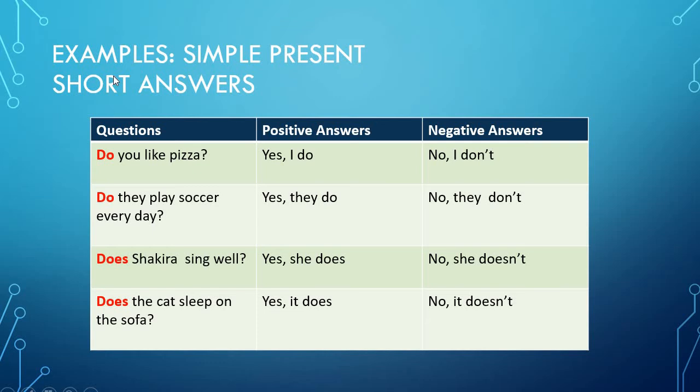Examples Simple Present Short Answers. Acá tenemos tres columnas donde en la primera tenemos unas preguntas, questions, y acá tenemos positive answers and negative answers. Do you like pizza? Yes I do, no I don't. Miren, aquí tenemos el pronombre you, respuesta I. ¿Te gusta la pizza? Sí a mí sí, no a mí no.